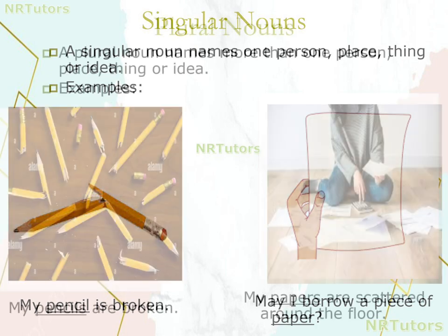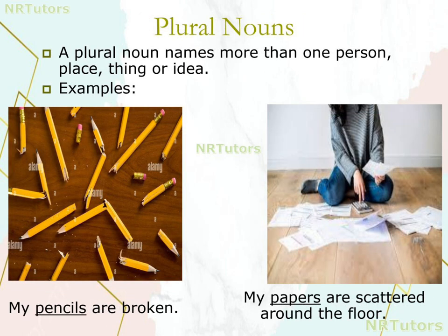Next one is plural nouns. A plural noun names more than one person, place, thing, और idea। Plural noun हमें एक से ज्यादा person, place, thing, और idea के बारे में बताता है। Example: 'My pencils are broken' — इसमें pencils एक plural noun है। 'My papers are scattered around the floor' — इसमें papers एक plural noun है।